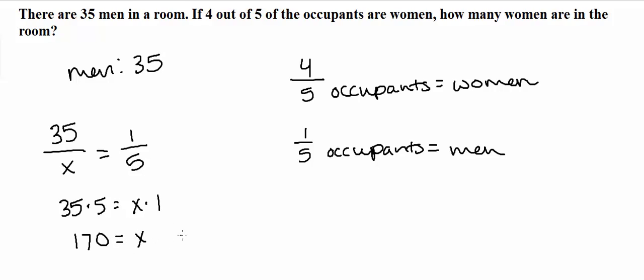And in this case, x signified total number of occupants. So I should have x is total occupants, which is equal to 170.